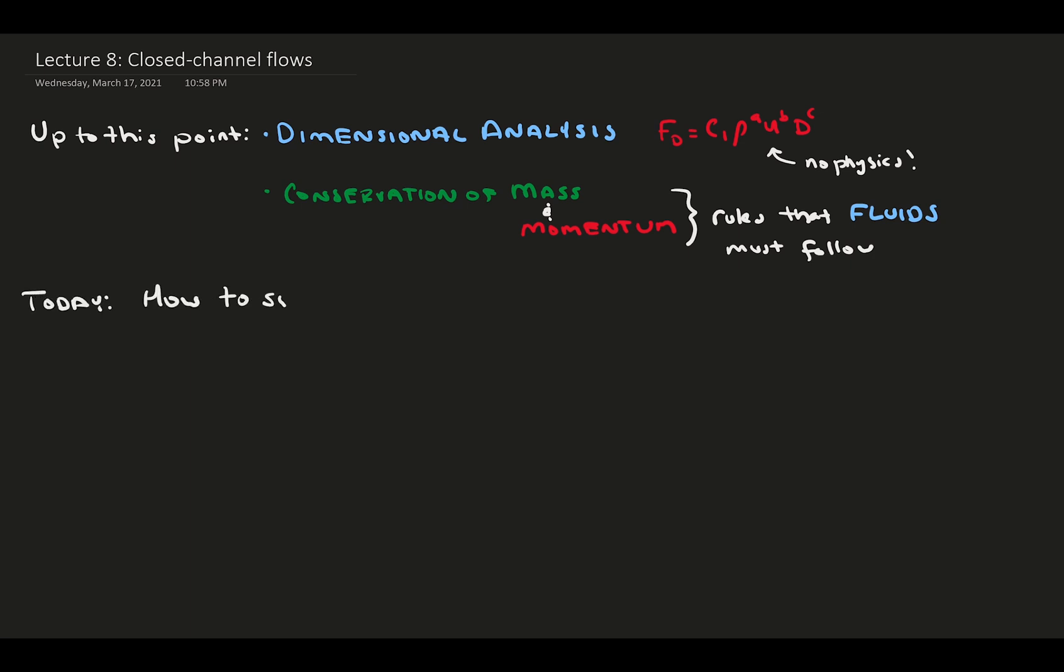Today, we pivot in this video series and start considering different types of actual flows. Specifically, we want to start exploring how we solve these conservation equations and get to meaningful answers for relatively simple flow fields. We begin with enclosed flows, which are among the easiest to solve. Specifically, the 2D enclosed flow, which is the closed channel flow.